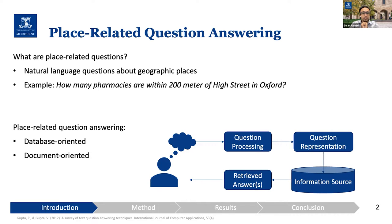While in document-oriented question answering, we have a textual document or unstructured text, and we need to match the content of the question to the content of the documents. In this study, we have focused on database-oriented question answering for place-related questions using knowledge graphs.